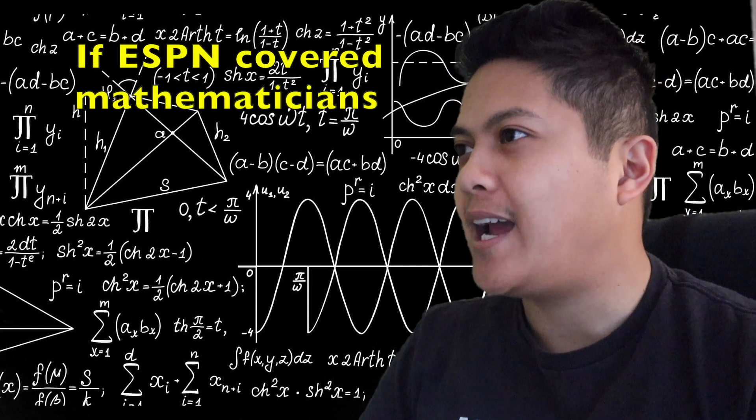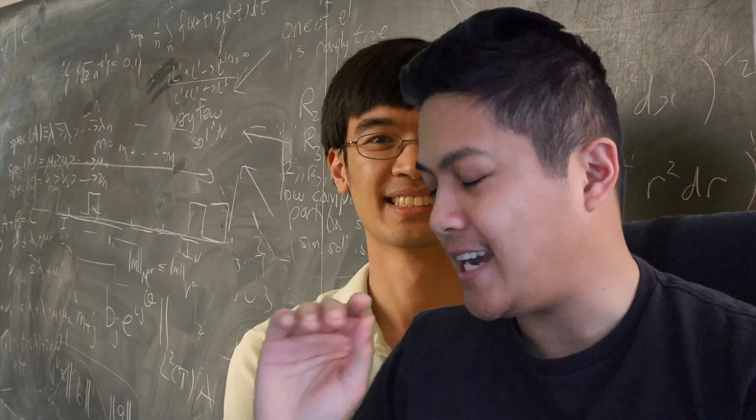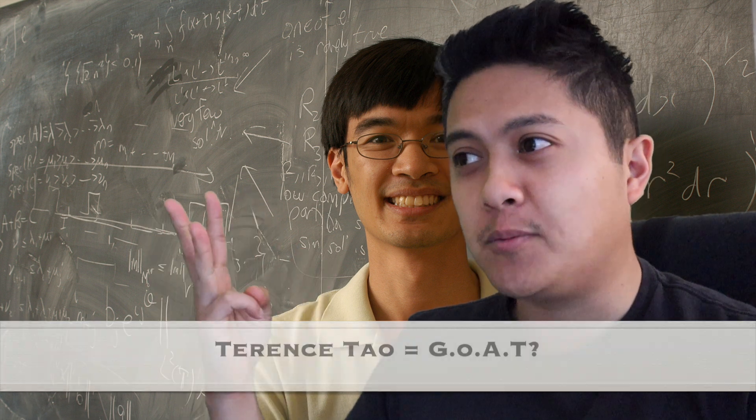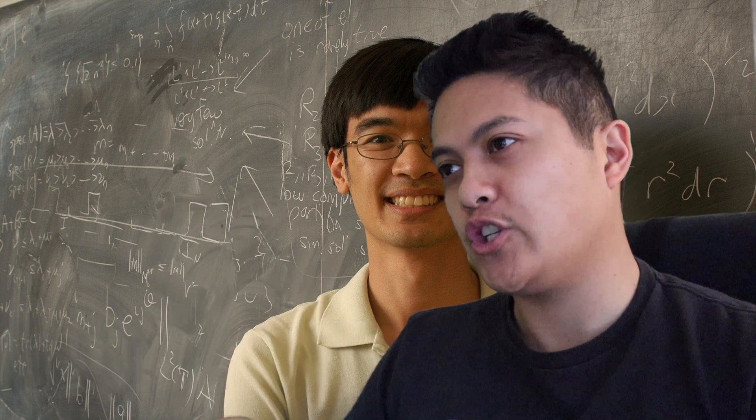If we're talking about current bests in the game right now, there's only one answer, and it's Double T, Terrence Tao. PhD at 20, full professor at 24, Fields Medal at 31. No question, he's the GOAT.